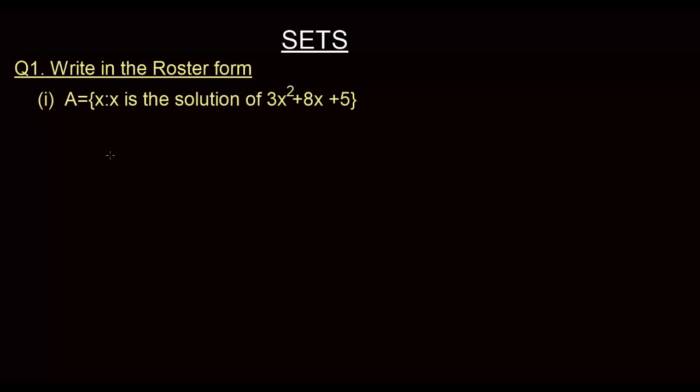Let us try to convert these into the questions that are given in the set builder form. This is the set builder form. I have to convert it into the roster form. So the first is A, the set of all x such that x is the solution of 3x² + 8x + 5.